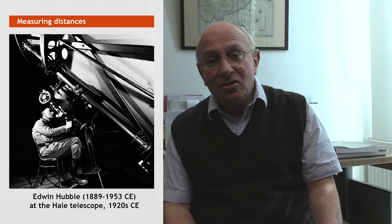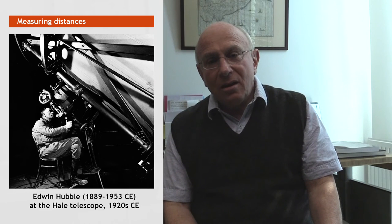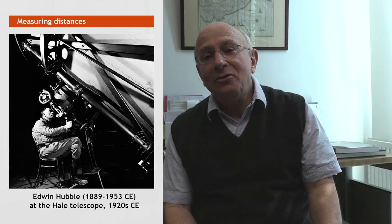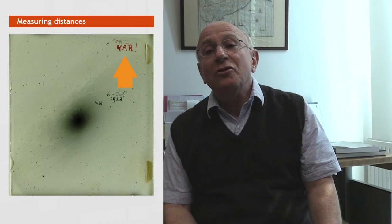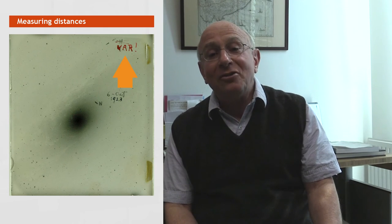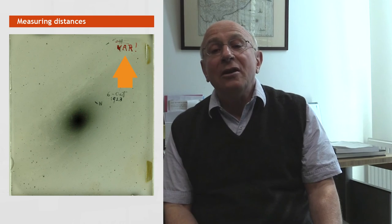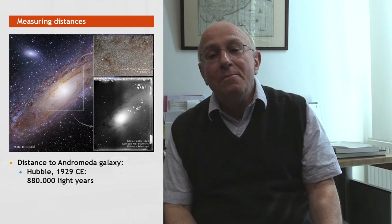Hubble used a very large telescope to capture a lot of light and started measuring the distances to these objects using variable stars, which have a known variation in light output. If you find one in a nearby galaxy, you can estimate the distance to that galaxy. He found one to his great surprise and delight in the Andromeda galaxy — that's what he's pointing out on this photograph. His original picture shows 'VAR!' with an exclamation mark — he was very excited. He estimated the distance at roughly 900,000 light years, but better measurements have since revised that to about two and a half million light years.